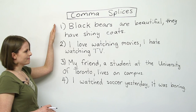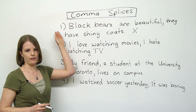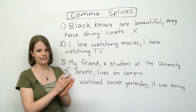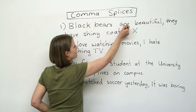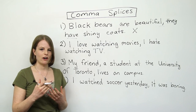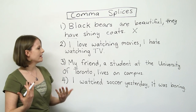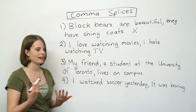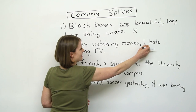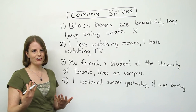Number one is incorrect. In this sentence we have an example of a comma splice. A comma splice is when we have two sentences — each with a subject and a verb — that are incorrectly put together with just a comma. Number two, 'I love watching movies, I hate watching TV,' is also incorrect. We have a complete sentence 'I love watching movies' — it could stand alone with a period. The second sentence, 'I hate watching TV,' also has a subject and a verb, but we've just put a comma between them. They're incorrectly combined.